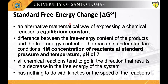Let us now proceed to the concept of the standard free energy change, represented by the notation delta G not prime. The standard free energy change is an alternative mathematical way of expressing a chemical reaction's equilibrium constant — the difference between the free energy content of the products and reactants under standard conditions: one molar concentration of reactants, standard pressure and temperature, and at a pH of 7. Standard free energy change also governs that all chemical reactions tend to go in the direction that results in a decrease in free energy, and shows where the final equilibrium for a reaction lies, but tells us nothing about how fast that equilibrium will be achieved.